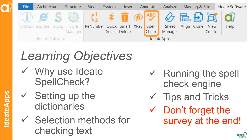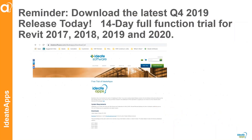Don't forget the survey at the end. Our latest release of ID8 Apps is from November 2019 — Q4 was our last update. We're planning to update it with the new release of Revit anticipated around mid-April, so we will then be supporting 2018, 19, 20, and 21. The latest version available on our website is from October 30th. You can download that for a no-cost, 14-day, full-function trial for not only ID8 Spellcheck, but all of the other eight productivity and efficiency tools.